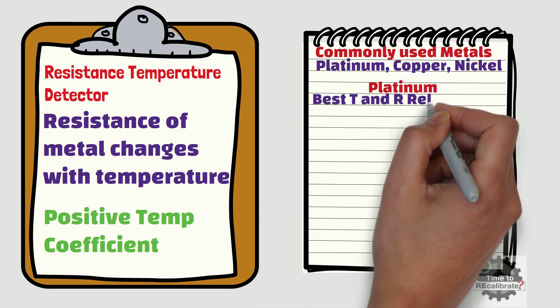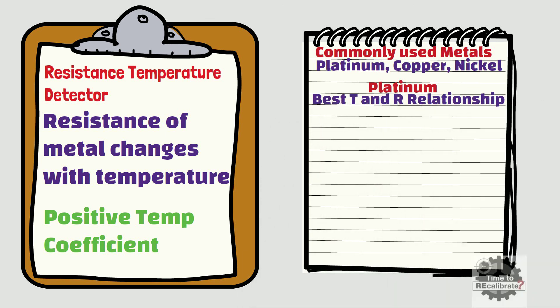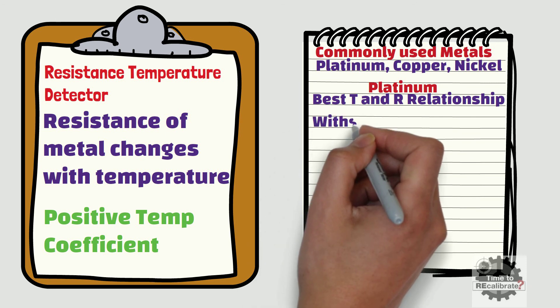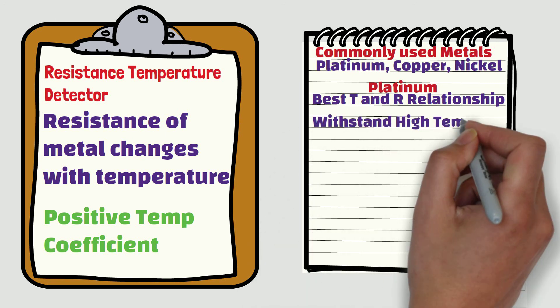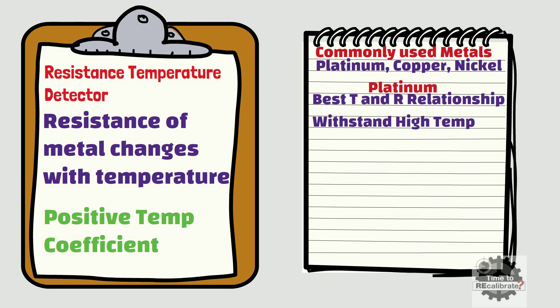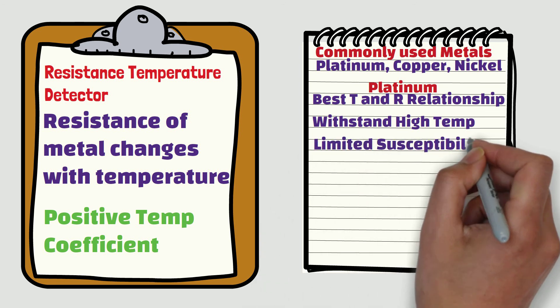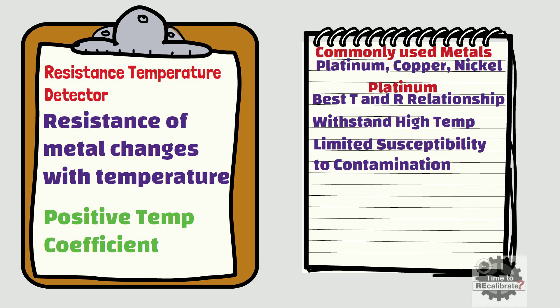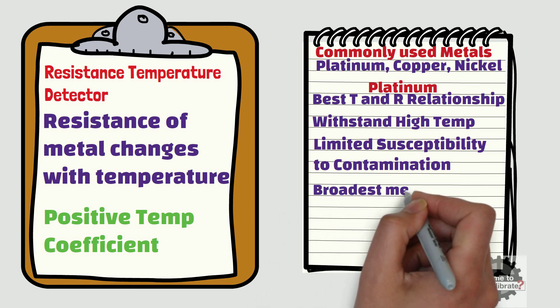This is because it has the best temperature to resistance relationship. Secondly, platinum is also popular because of its limited susceptibility to contamination. Lastly, platinum has the broadest measuring range.